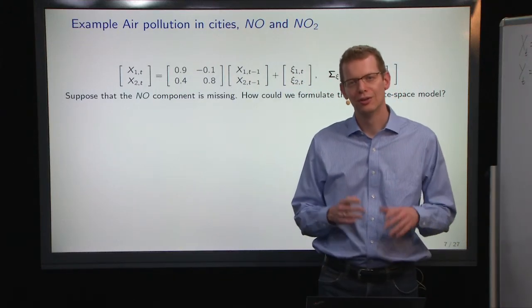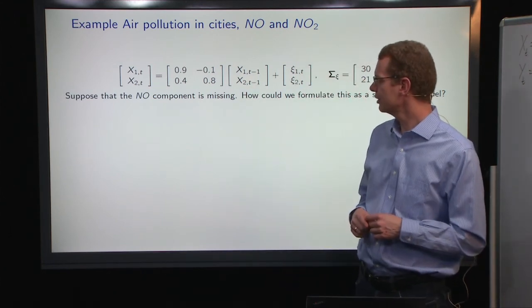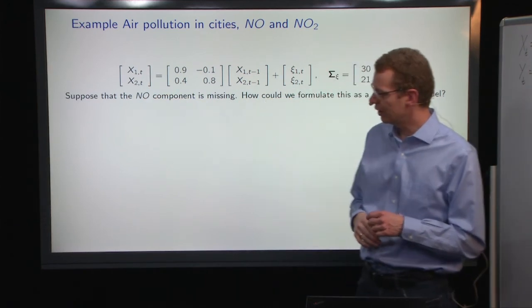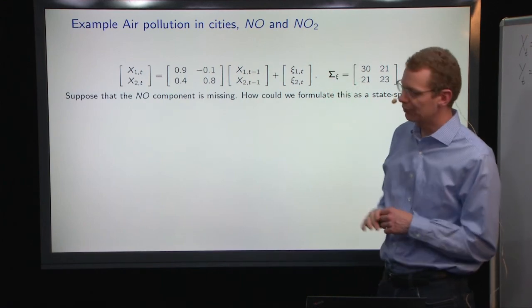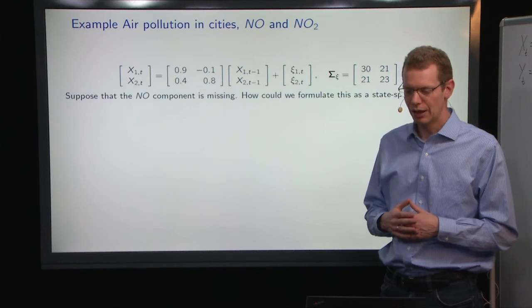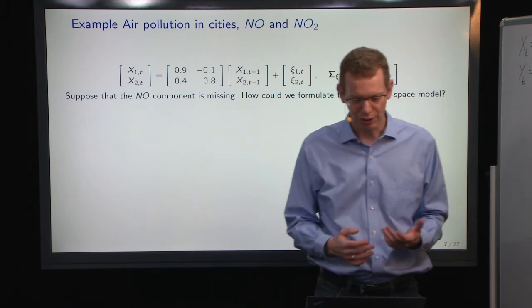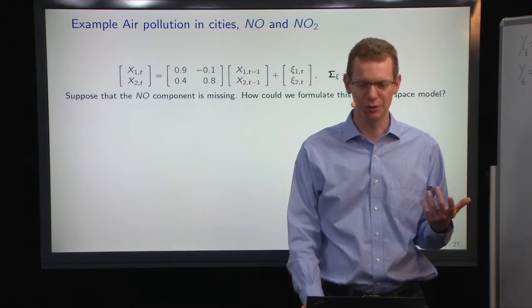First we'll go back to an old example that we used already in the first lecture, where we're looking at the NO and NO2 concentration in Copenhagen, and at that point we posited this model, so let's just assume the same model again here. And what we did then was say, what if the nitrogen oxide component or measurement was missing? How can we formulate this as a state space model?